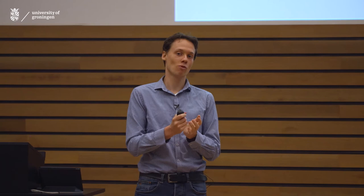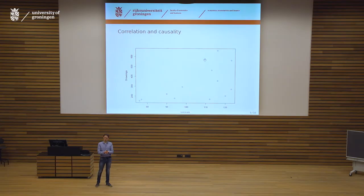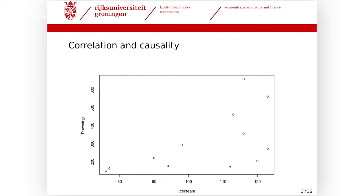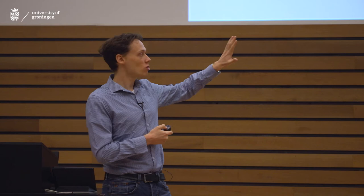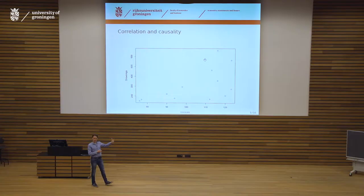So what's going on? Do these two really cause each other? Hopefully you come to the conclusion that this is probably not the case. There is an underlying variable: hot weather. When it's warm outside, people start to swim — and to drown, you need to swim — and they eat more ice cream. So there's an underlying factor causing both variables to go up. If we only look at these two variables, we draw the wrong conclusion.